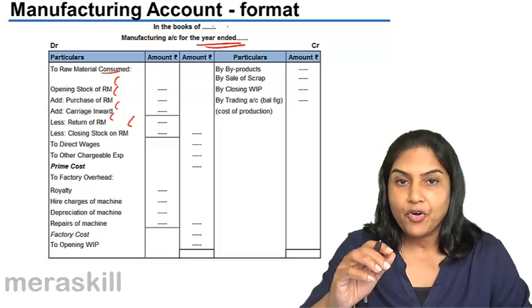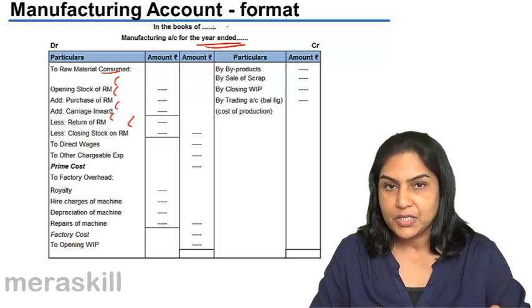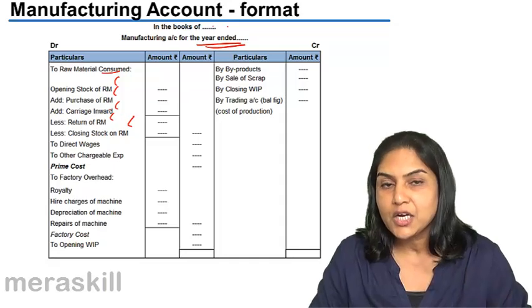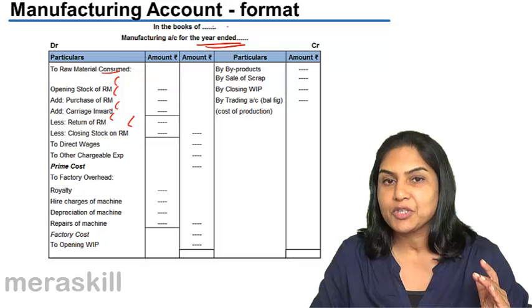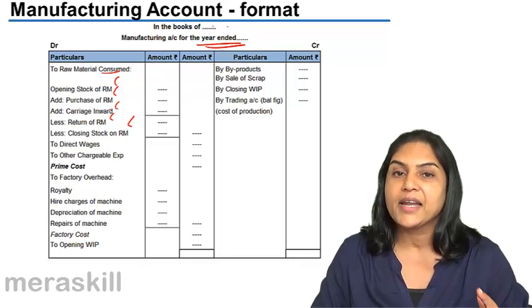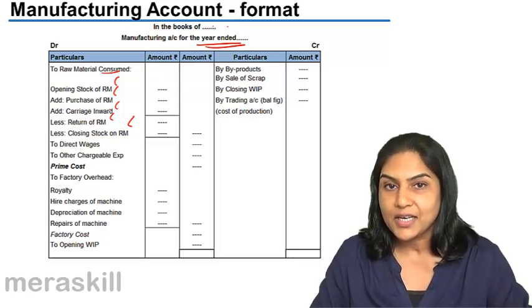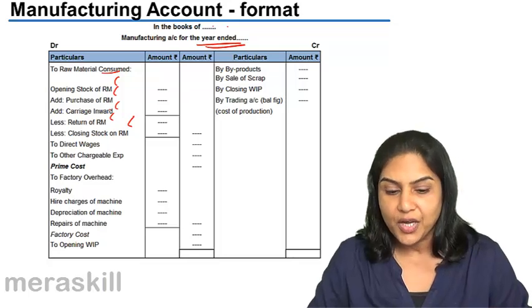So, we have raw material consumed first. Opening stock plus purchases minus closing stock. Purchases is net purchases. That means purchase is less return and includes all costs incurred to bring the goods into the factory.